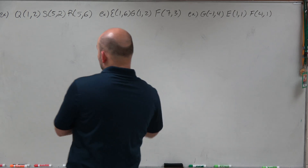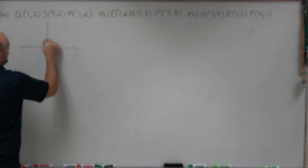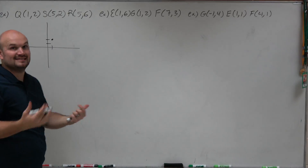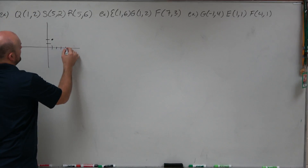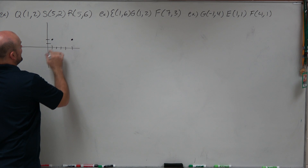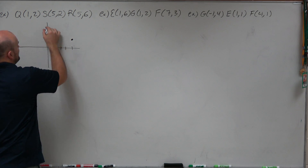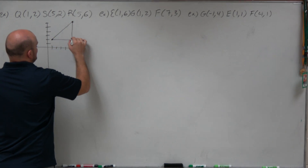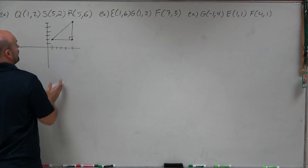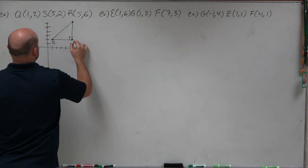First thing when you're given a set of points is just to plot them. We need to know these measurements to find the distance, and also visually it's important to make sure we know what we're looking at. So you can see here I have this triangle, and it looks like it is a right triangle as I have horizontal and vertical lines. It's also very helpful to label what your points are.